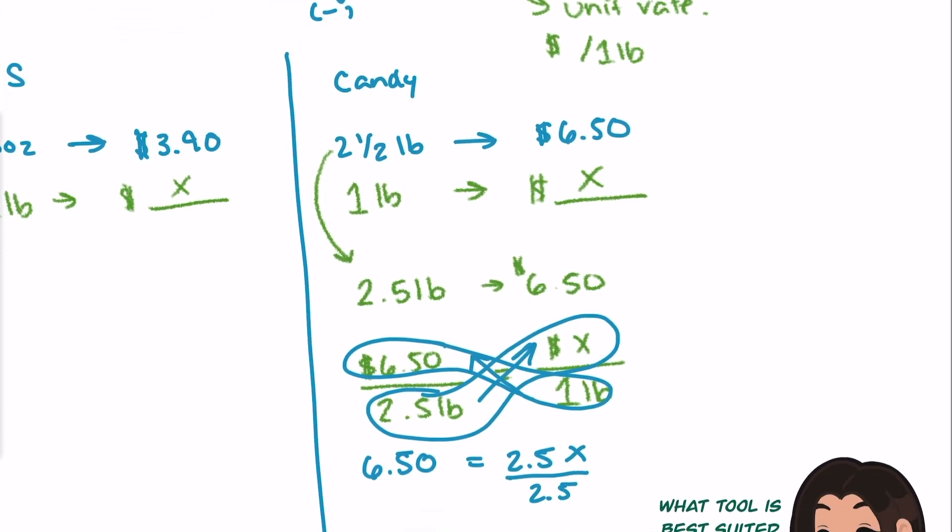I can solve a regular equation and get x alone. Divide by $2.5, divide by $2.5. $6.50 divided by $2.5 gets me $2.6 or, realistically, $2.60. Here I know that one pound of this candy from this store from Candyopolis is going to cost us $2.60.